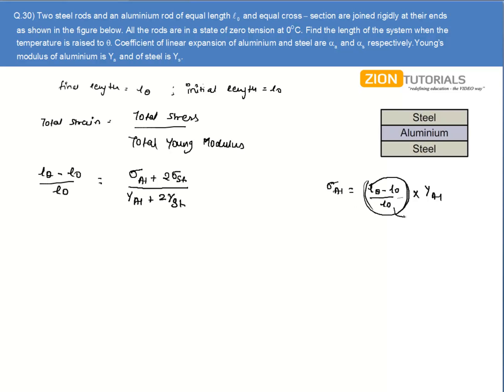And we know that by thermal expansion, the change in length is given by initial length times alpha delta T. So longitudinal strain is given by alpha delta T. So I substitute this over here. So I get sigma for aluminum as alpha of aluminum times delta T times Y of aluminum.